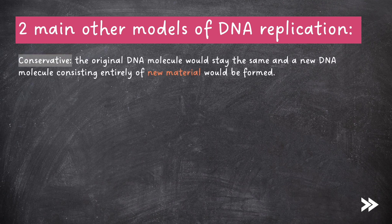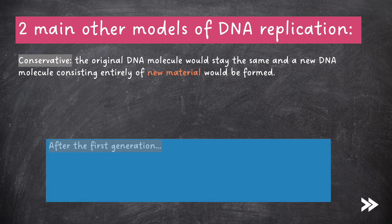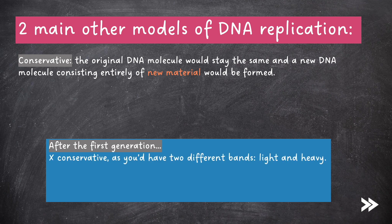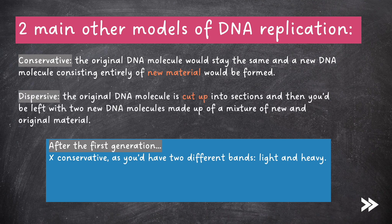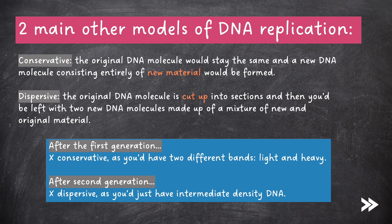In conservative replication, it was proposed that the original DNA molecule would stay the same and a new DNA molecule consisting entirely of new material would be formed. However, after the first generation in the Meselson and Stahl experiment, we knew it could not be conservative, as you'd have two different bands — light and heavy. The other model was dispersive, which proposed that the original DNA molecule would be cut up into sections, and you'd be left with two new DNA molecules made up of a mixture of new and original material. However, after the second generation, we knew it could not be dispersive, as you'd just have intermediate density DNA.